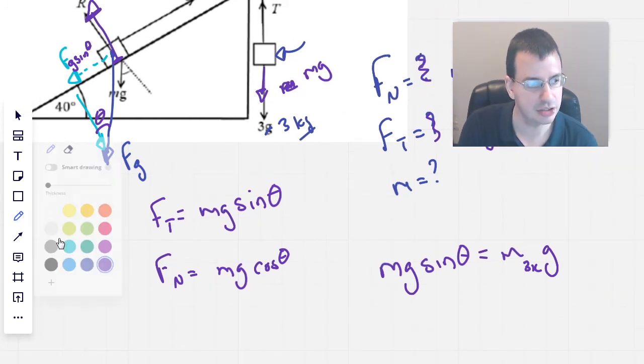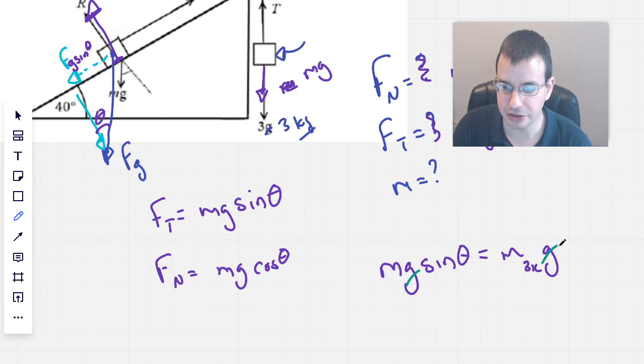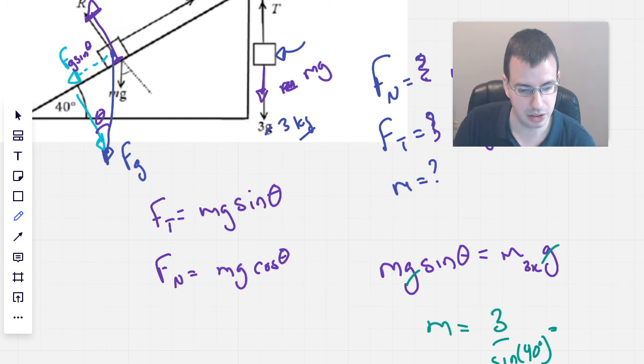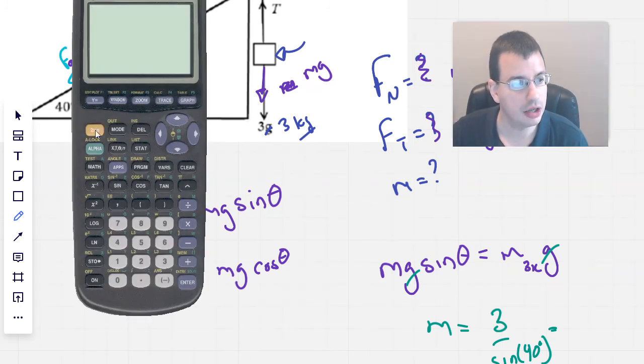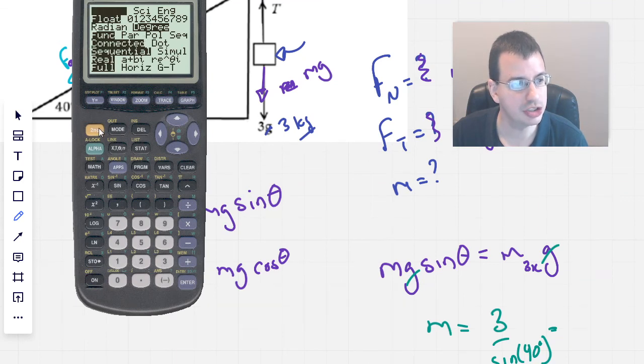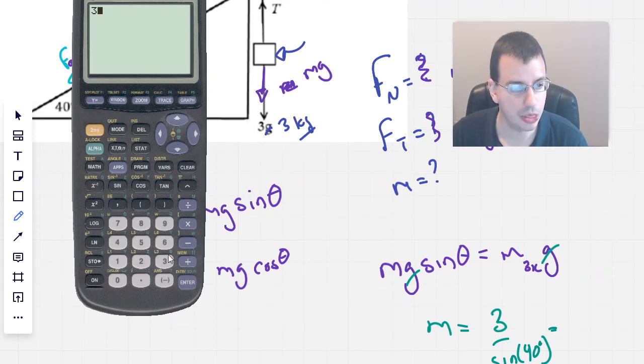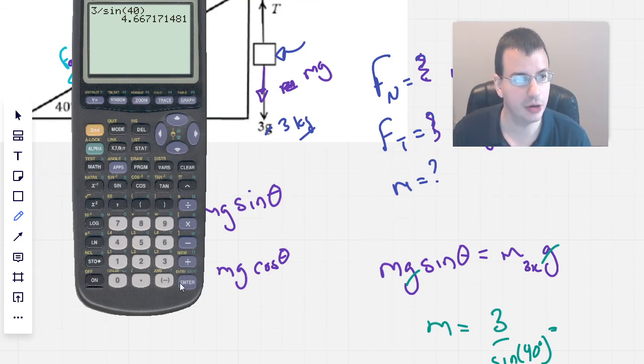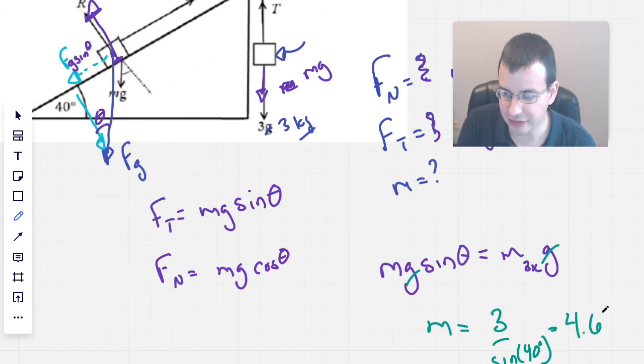Solving this, because we know most of it, the g's will cancel. And we have m equals three, because three kilograms here, divided by sine of 40, specifically 40 degrees. Go to our calculator, make sure we're in degrees, we are, and we do three divided by sine of 40. We get 4.67, 4.67 kilograms.